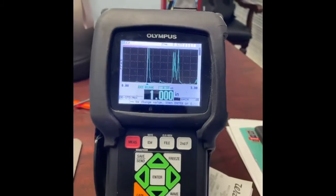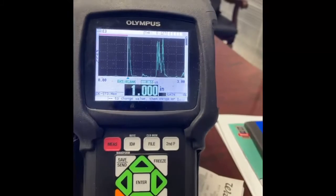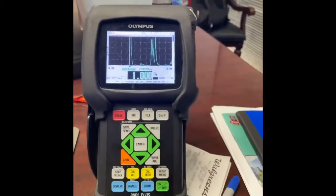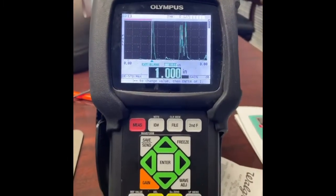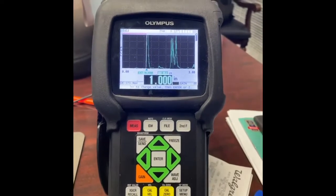So if you're ever in a bind and you need to calibrate using multiple back wall echoes, that would be the way to do it. Again, always make sure that you consult your procedure first to see if you're even allowed to do that.